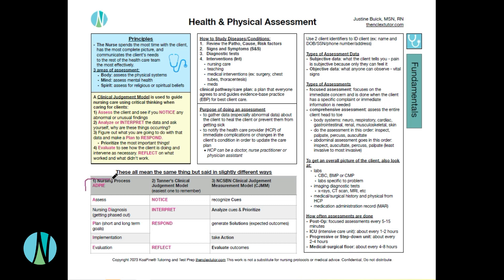We're going to go over the main clinical judgment models — there are three of them. There's the nursing process, which is probably what you used at school. There's Tanner's clinical judgment model, which is really the easiest one to remember and frequently the one that, as an actual nurse on the floor, you'd be thinking about and using. And then there's the NCLEX's — the NCSBN's clinical judgment measurement model. All of these really mean the same thing; they're just said in slightly different ways.